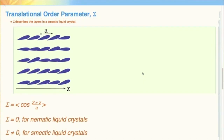Another descriptor of liquid crystals is the translational order parameter. Sigma is used to describe the layering in smectic liquid crystals. In this equation, z is position and a is the distance between layers. Sigma is the average of the periodic function 2πz over a.